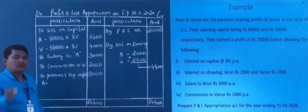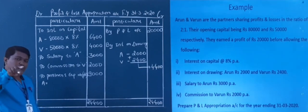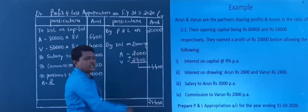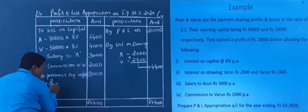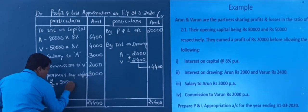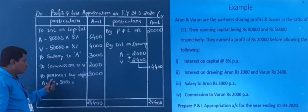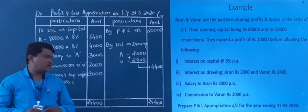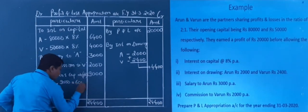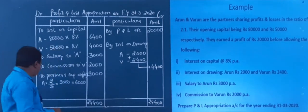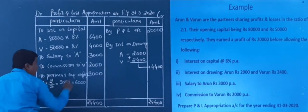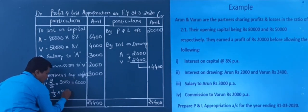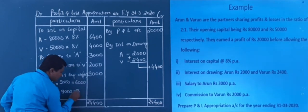Arun's share is 2 out of a total of 3 (ratio 2:1, total 2+1=3). So Arun's share = 2/3 into 9,000 = 6,000. Similarly, Varun's share = 1/3 into 9,000 = 3,000. This is the preparation of the profit and loss appropriation account for this question.